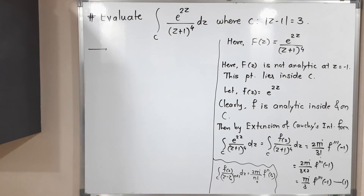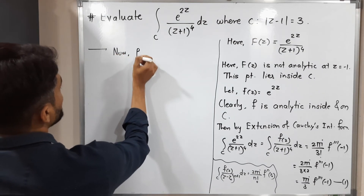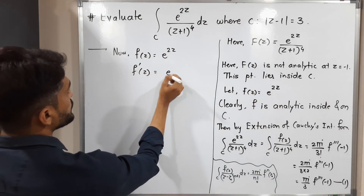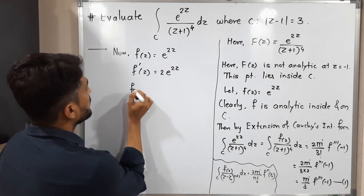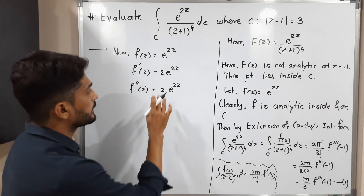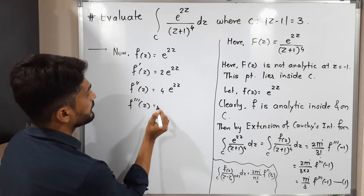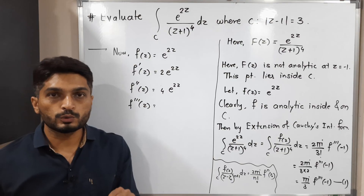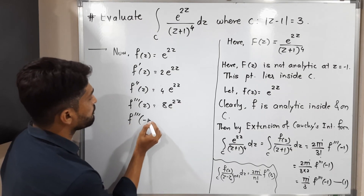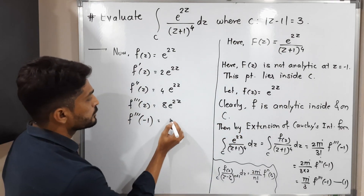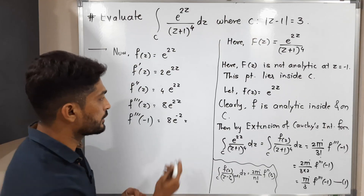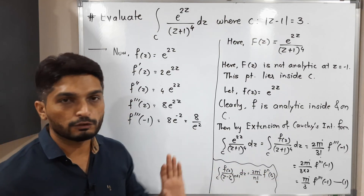Our small f(z) = e^(2z). The first derivative f'(z) = 2e^(2z). The second derivative f''(z) = 4e^(2z). The third derivative f'''(z) = 8e^(2z). Therefore f'''(−1) = 8e^(−2) = 8/e².